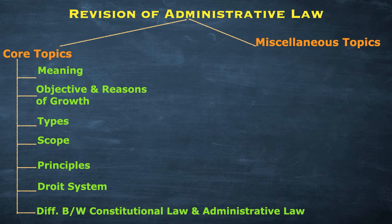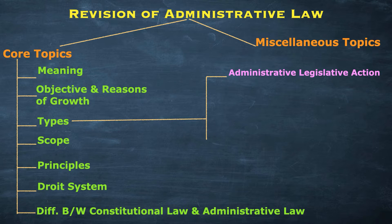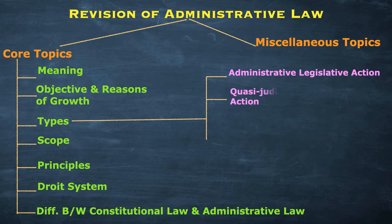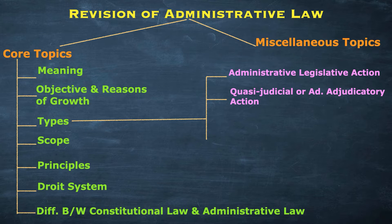Now let's look at the types of administrative action. The first is administrative legislative action, under which laws, bylaws, or similar provisions are made by administrative bodies. The second is quasi-judicial or administrative adjudicatory action, where an administrative body takes on an adjudicatory role to resolve disputes.